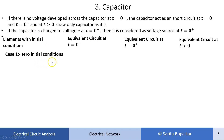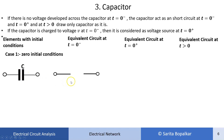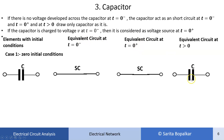Case 1 for capacitor: zero initial conditions — before switching, the capacitor is not charged and voltage across it is 0. If there is no voltage at t equal to 0 minus, the capacitor acts as a short circuit because the voltage at both plates is the same and the potential difference is 0. This short circuit status remains the same at t equal to 0 plus. For t greater than 0, we represent it as a capacitor.